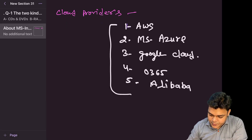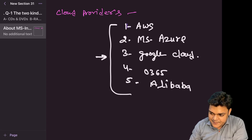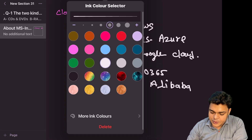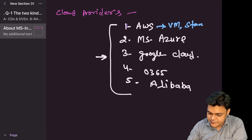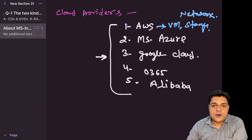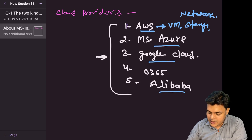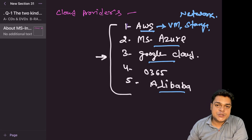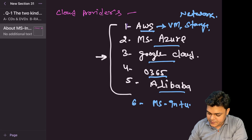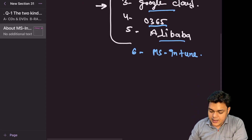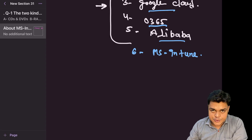As cloud service providers, they give us the option to purchase resources. For example, over the Amazon portal we can purchase a virtual machine, set up storage, networking, and security. If you want to set up resources for an organization, AWS, Google Cloud, Alibaba Cloud, and Microsoft Azure can all help. However, when we talk about Office 365, and I'll add one more — Microsoft Intune — these give us options to manage resources but not to create new infrastructure.